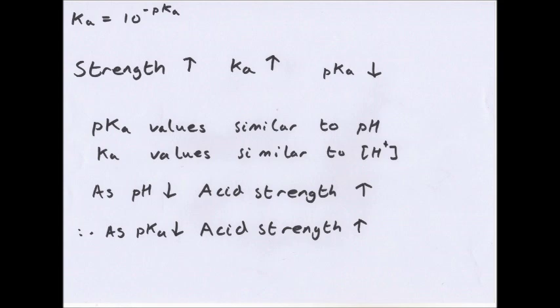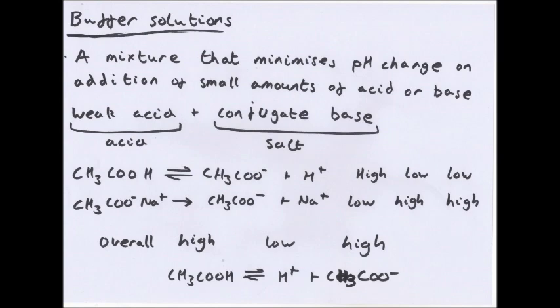Ka = 10^(−pKa). Think of Ka like [H+] concentration and pKa like pH. As acid strength increases, Ka increases and pKa decreases — just as stronger acids have higher [H+] but lower pH values. So the 'p' prefix always inverts the relationship.